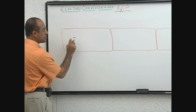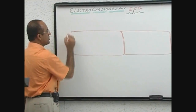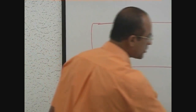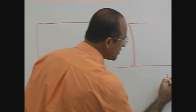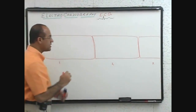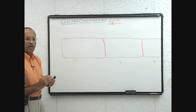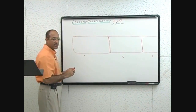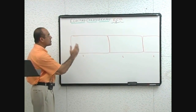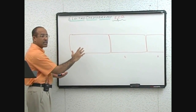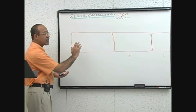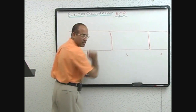Let's suppose this is the first myocardial cell — ventricular myocardial — this is the second cell, and this is the third cell. We will see how the electrical activity goes through them, and then discuss how that electrical activity can eventually be translated into an ECG pattern.